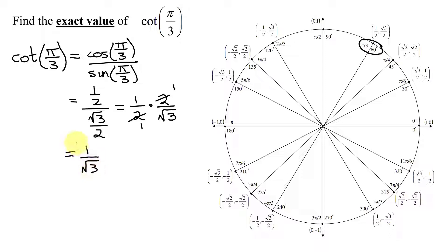Now, if you do not have to rationalize your denominator, you can leave the answer in that format. So the cotangent of pi over 3 equals 1 divided by the square root of 3.